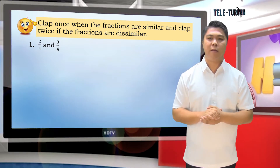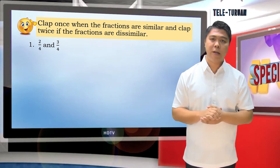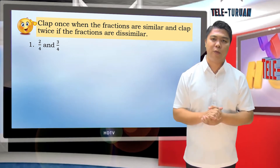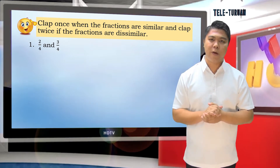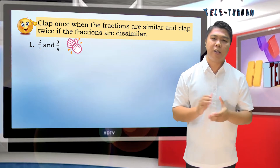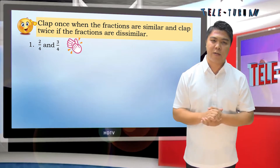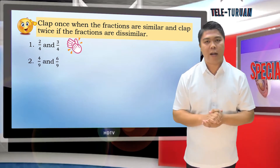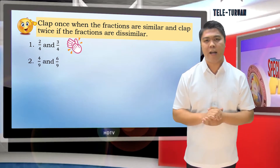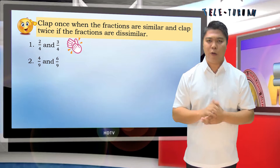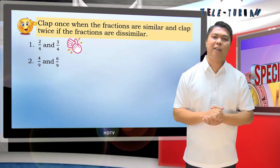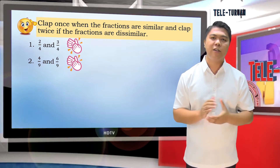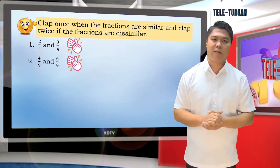Number 1: 2 fourths and 3 fourths. Very good! 2 fourths and 3 fourths are similar fractions. Number 2: 4 ninths and 6 ninths. You are right! 4 ninths and 6 ninths are similar fractions.